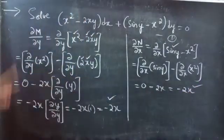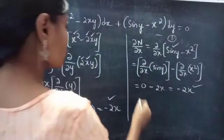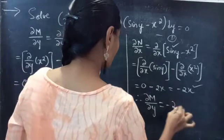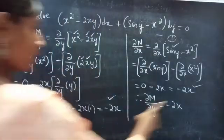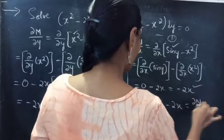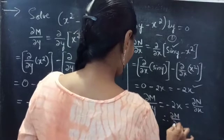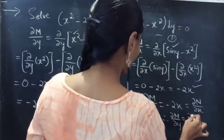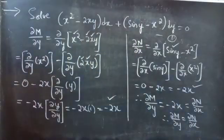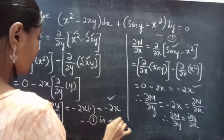So here ∂M/∂y equals ∂N/∂x. Therefore, ∂M/∂y equals minus 2x, and we also have ∂N/∂x equals minus 2x. Since the partial derivative of M with respect to y equals the partial derivative of N with respect to x, we can say that equation 1 is an exact equation.